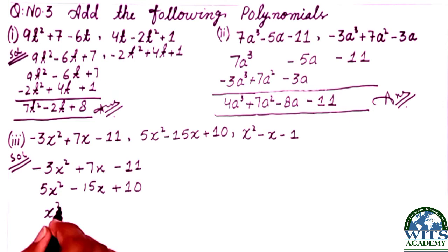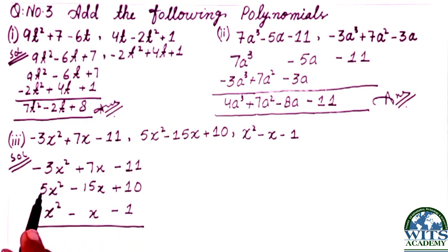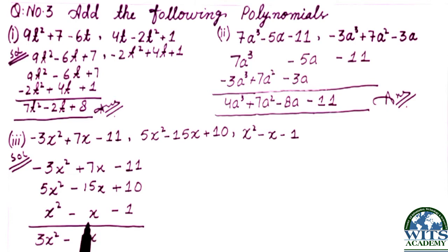We arrange: under cube write cube value 7a cubed minus 3a cubed. Under square write 5a squared plus a squared. Students you can see the numbers are written in arrangement. For cubes: 7 minus 3 equals 4. For squares: 5 and 1 makes 6. For a terms: minus 15 and minus 1 makes minus 16. Constants: plus 10 and minus 1, opposite signs, so we subtract and get plus 9. This is the answer. I hope students you understand addition.